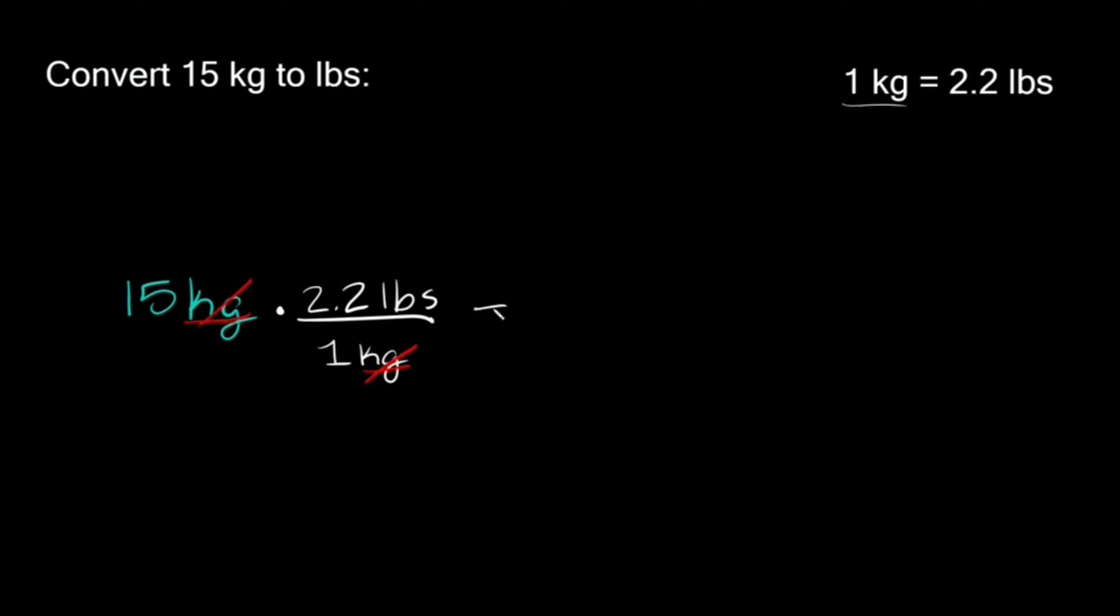Now the last thing we have to do is just simplify this and we're going to do that by multiplying everything together. So we're going to multiply everything on top together. So we have 15 times 2.2 pounds, and then this is going to go over whatever we have on the bottom over here which is just a 1.